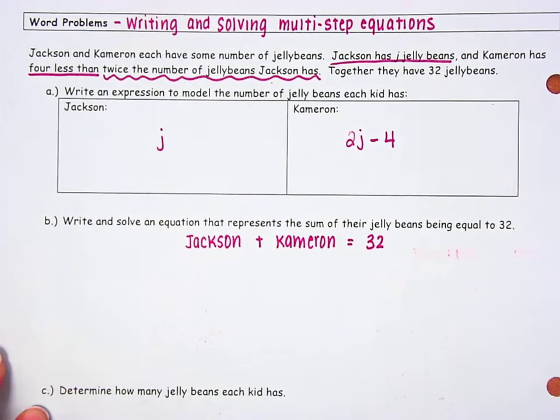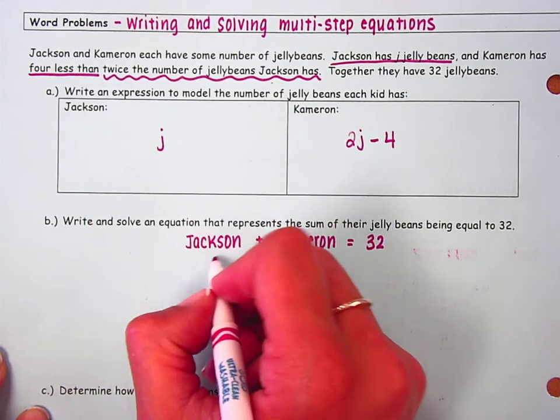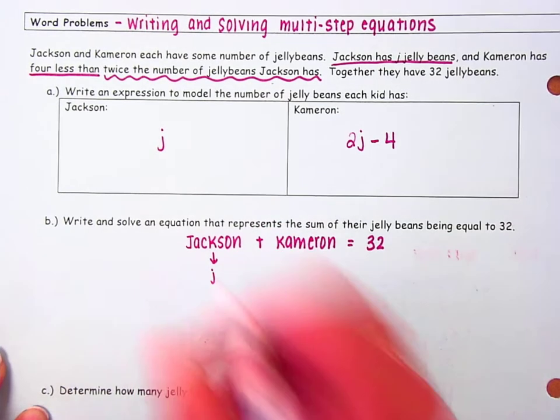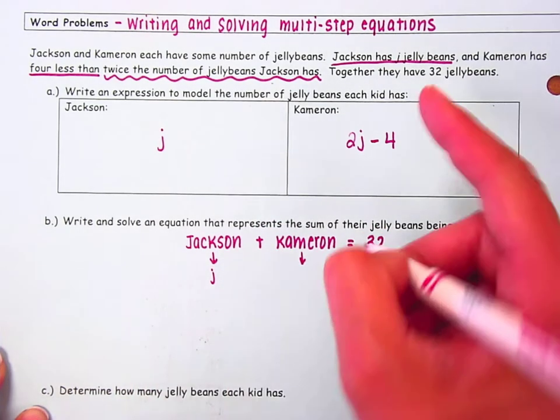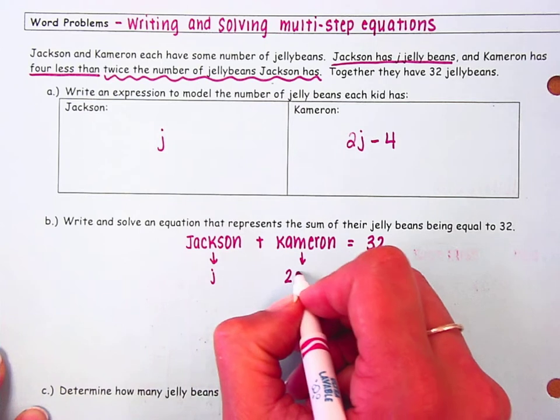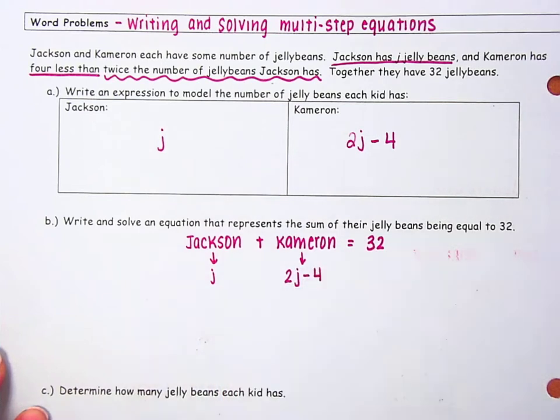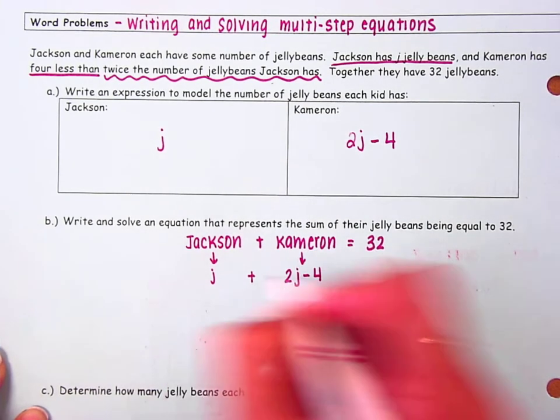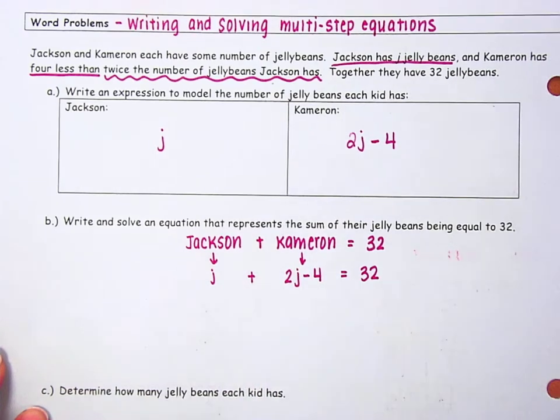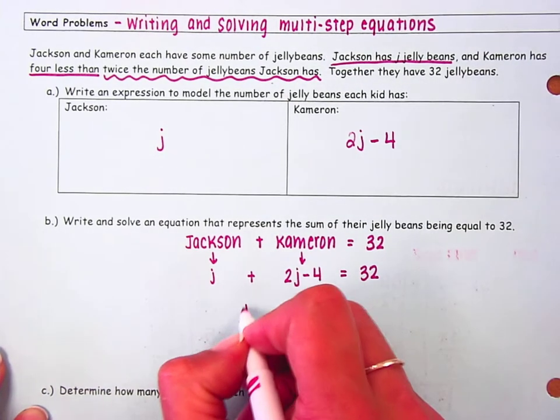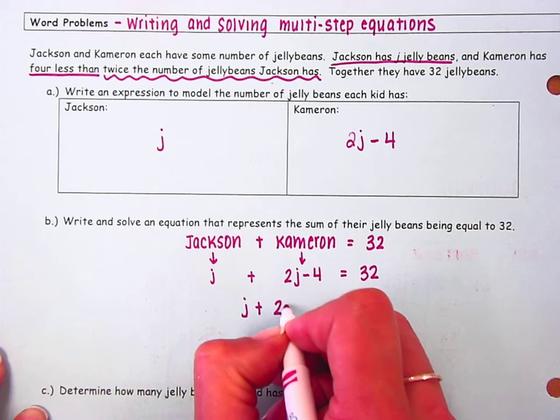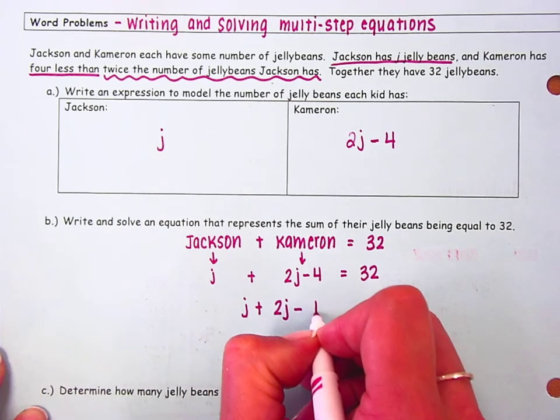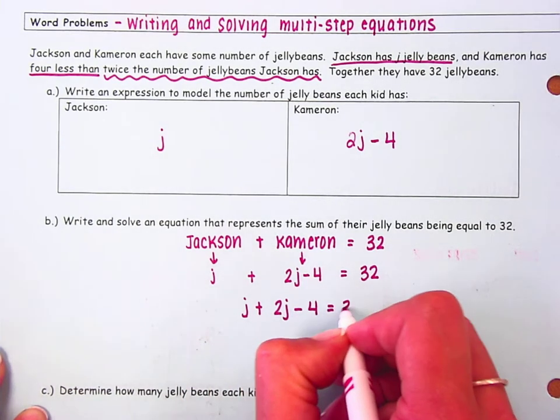So now I'm going to revisit my expressions. Jackson had J jelly beans, Cameron had 2J minus 4 jelly beans, and I know if I combine them together I should get 32. So my equation is J plus 2J minus 4 is equal to 32.